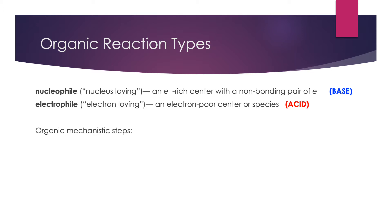An electrophile, which means electron-loving, is basically an electron-poor center of a species. It's a positive area in terms of the molecular electrostatic potential — a positive area in the molecule. We often associate these things with acids, so you can see already the acid-base chemistry that is implicit in a lot of what we talk about.